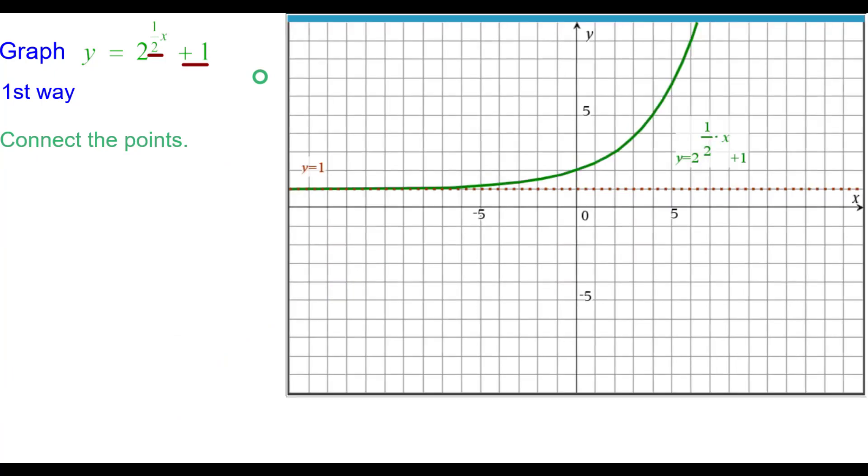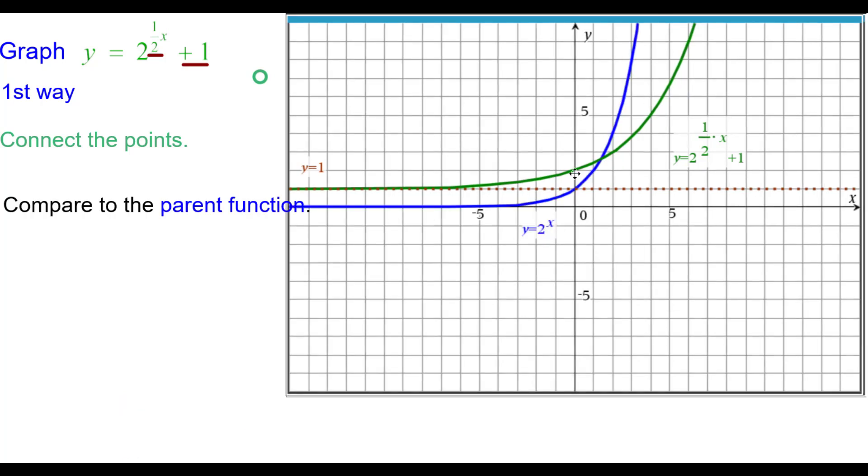So we connect the points and we get that easy chair look. Compare that to the parent function and you can see it has changed in the shape a little bit and the green graph has been moved up 1.